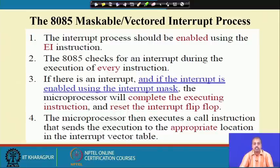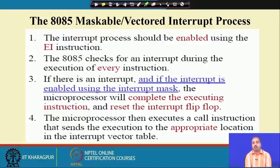If the mask flip-flop value is 0, the processor will sense that interrupt, complete executing the current instruction, reset the interrupt flip-flop, and execute a hardware call instruction. Unlike INTR, where the device had to provide the vector address through buffers, here the addresses are fixed and the processor directly goes to the corresponding address — for example, RST 5.5 multiplies 5.5 by 8, giving address 44 hex.